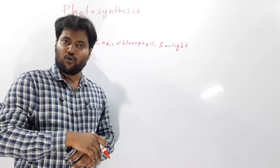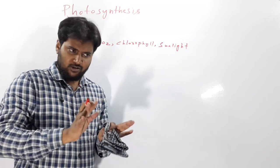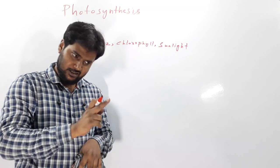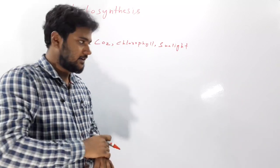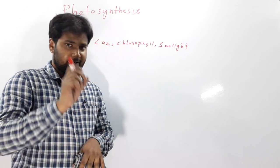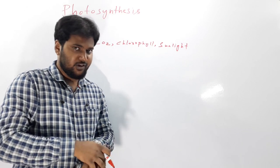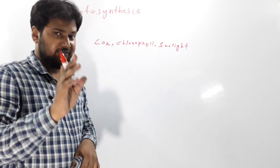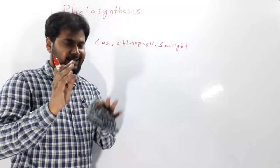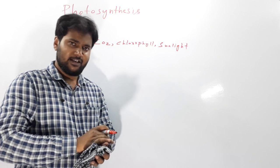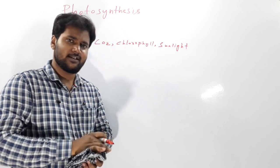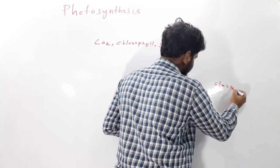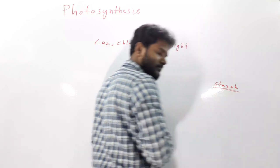The final product of photosynthesis is glucose, but glucose is not generally stored in the plant — it is transformed into starch, which is then stored. So if we go to find glucose in a plant, we will not find it; we will find starch instead.